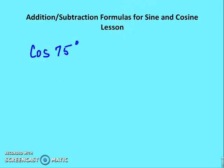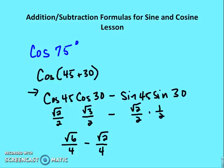Now find cosine of 75 degrees — I'll pause here for a moment. Cosine of 75° is cosine of (45° + 30°): (√2/2)(√3/2) − (√2/2)(1/2) = √6/4 − √2/4.